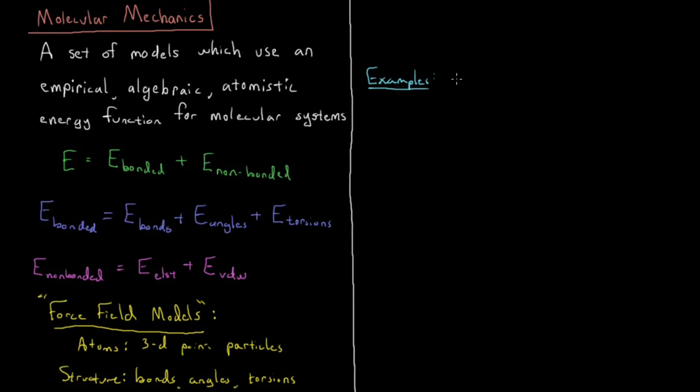So these examples include things like AMBER. Most of these are acronyms. So AMBER is Assisted Model Building with Energy Refinement. And that's the model that I'm going to discuss in spelling out the functional form of all these terms in the next five or so videos.